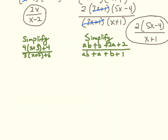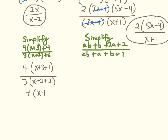This next one is a bit different. I have a common factor of 4 in the two terms of the numerator, leaving (x plus 3) in the first term and 1 in the second. In the denominator I factor out a 3, leaving (x plus 2) and 2. That gives me 4 times (x plus 4) over 3 times (x plus 4) — how convenient. I cancel those out and I'm left with 4 thirds.